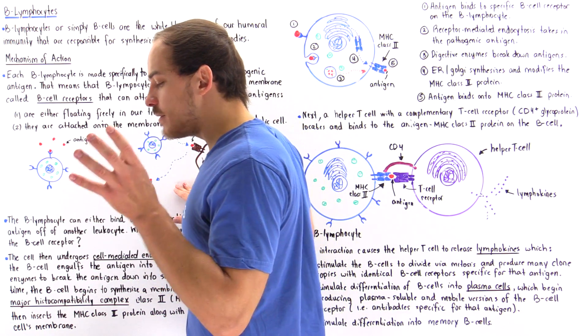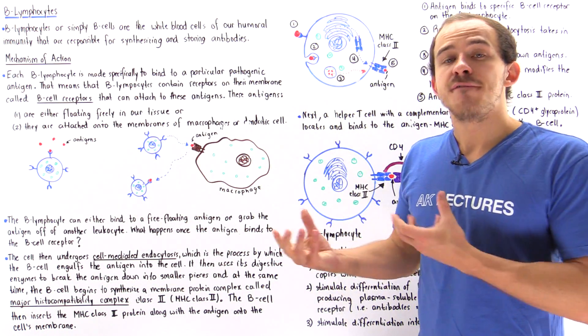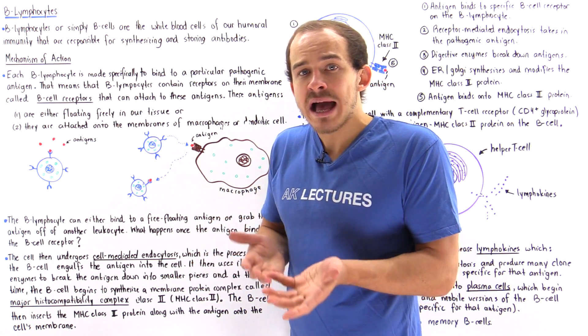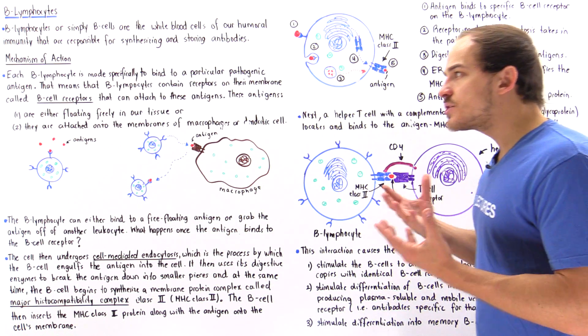The entire point of a B lymphocyte is to collect these antigens found inside our body. These antigens came from some type of pathogen, for example, a bacterial cell.